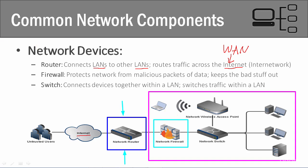The firewall keeps the bad stuff out of the network. We won't go into detail about all the different malware and malicious attacks because this is not an information security or cybersecurity class. But at a high level, a firewall protects our network from malicious data and malicious packets of information. A packet is what we call information as it travels across the network.